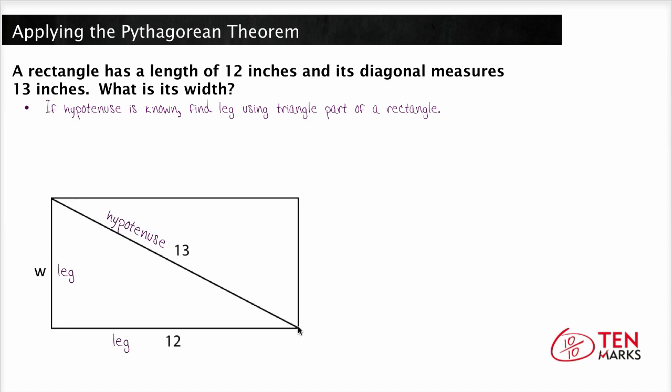Since the rectangle has right angles, the triangles that's created are right triangles. Therefore, you can use the Pythagorean theorem to solve for the missing leg. 13 squared equals W squared plus 12 squared. We know 13 squared is 169 and 12 squared is 144.